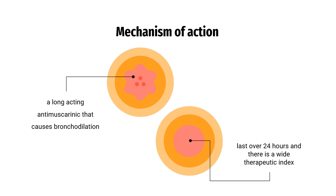Mechanism of Action: Umeclidinium is a long-acting muscarinic antagonist, often referred to as an anticholinergic. It has similar affinity to the subtypes of muscarinic receptors M1 to M5. In the airways, it exhibits pharmacological effects through inhibition of the M3 receptor at the smooth muscle, leading to bronchodilation. The competitive and reversible nature of antagonism was shown with human and animal origin receptors and isolated organ preparations. In preclinical in vitro as well as in vivo studies, prevention of methacholine and acetylcholine-induced bronchoconstriction effects were dose-dependent and lasted longer than 24 hours. The clinical relevance of these findings is unknown. The bronchodilation following inhalation of Umeclidinium is predominantly a site-specific effect.